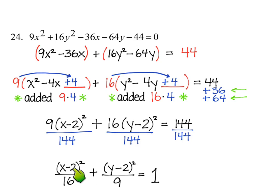We can see that the center of the ellipse is 2, 2. And our a is 4. Our b is 3. And then the difference of 16 and 9 is 7, so our c is the square root of 7.